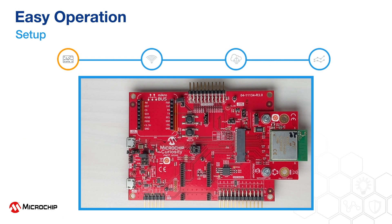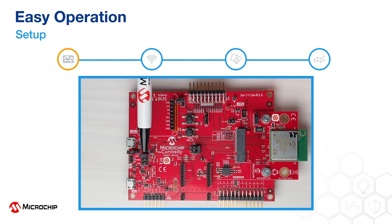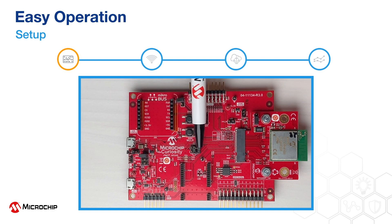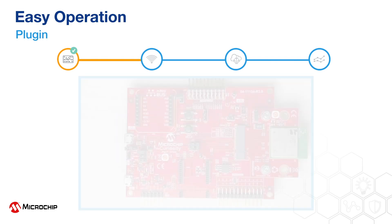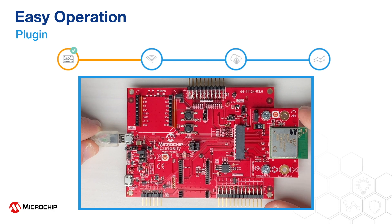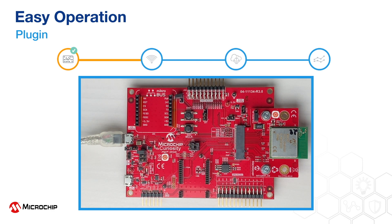First, make sure the jumpers are correctly placed. J202 must be connected to VBUS input. J301 are open, and J209 needs to be closed. Plug in the included micro USB cable to the Curiosity board through J204, and the other end into the USB port of your laptop or computer.